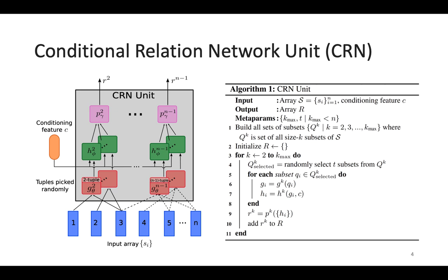The CIN is a relational transformer which encapsulates and transforms an array S of objects into a new array R, conditioned on a contextual feature C. At the core of the CIN unit, it iteratively computes high-order relations between input objects in a subset of S, and subsequently modulates the encoding through the contextual feature.